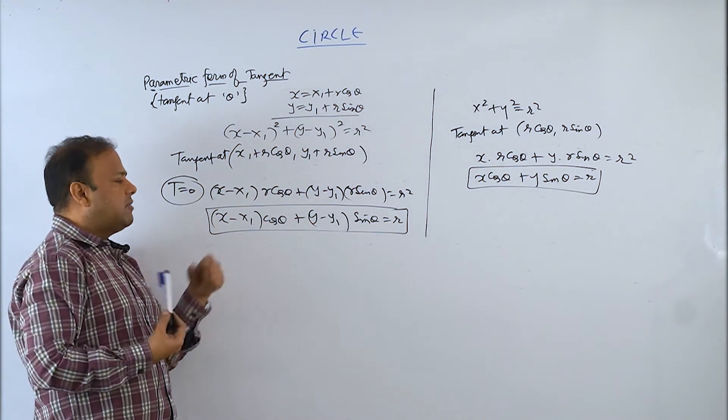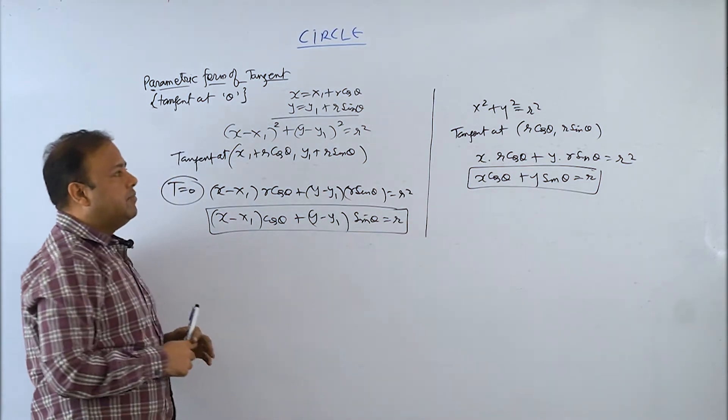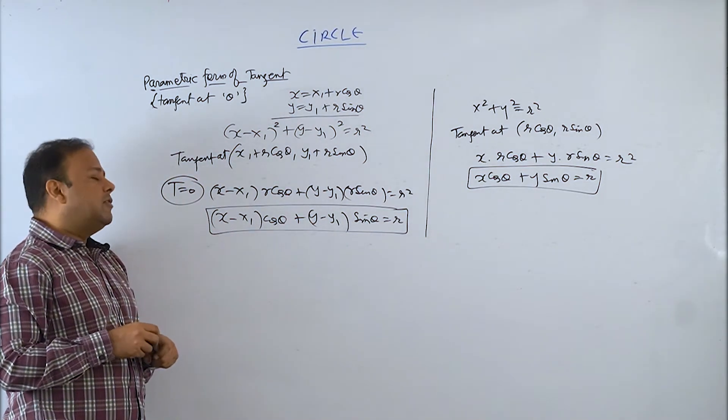Center there is origin, here is x1, y1. If you keep x1, y1 at origin, you will get the same thing. And this is called parametric form of tangent.